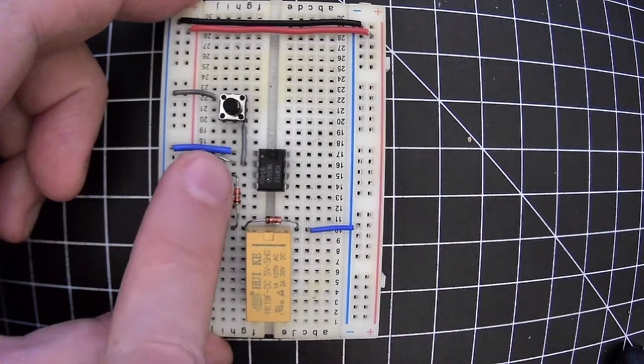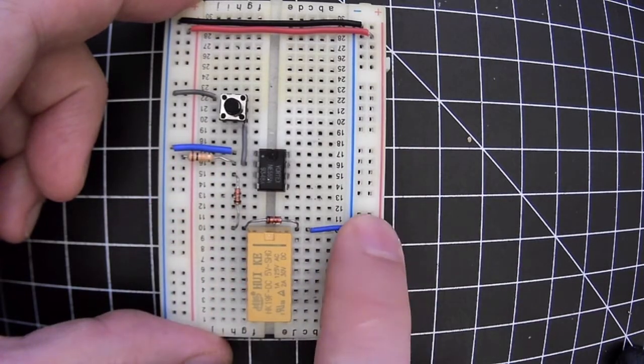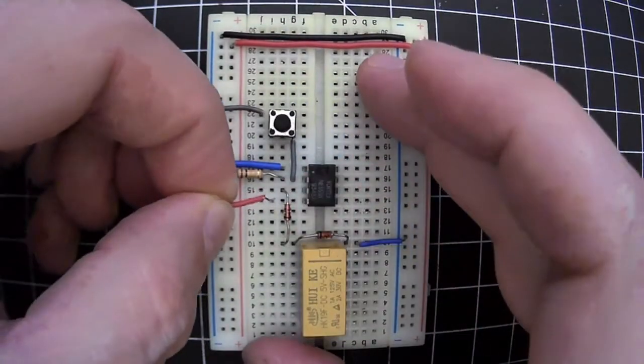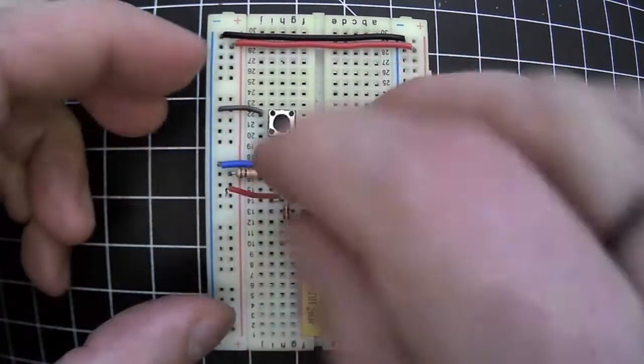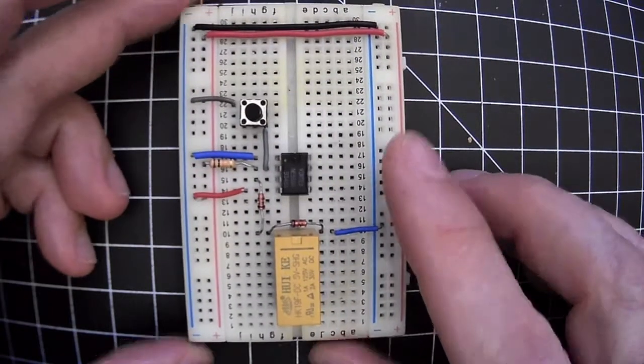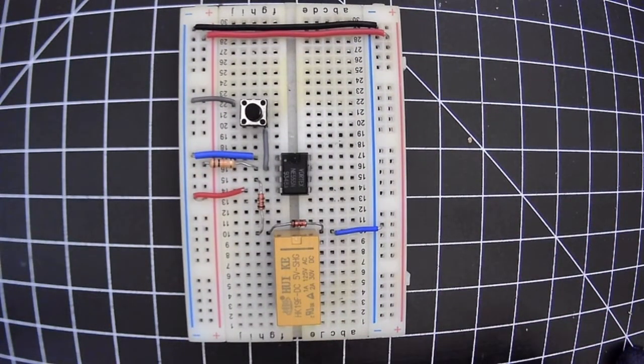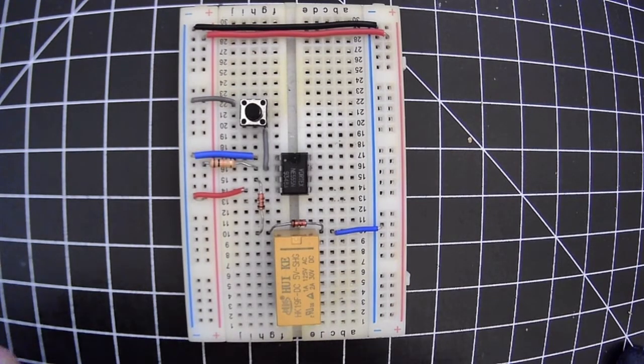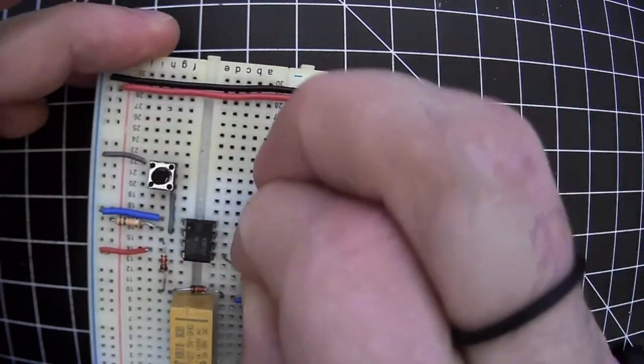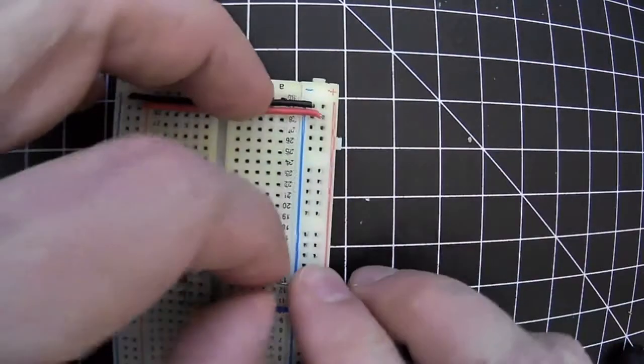So now pin 3 going high will turn on our relay, and we go to pin 4 and see that it's connected directly to power. So I'm connecting pin 4 to my red rail. Then on pin 5, I see that it's connected to ground through a 0.01 microfarad capacitor, and I have one right here that I can use to connect pin 5 to ground.